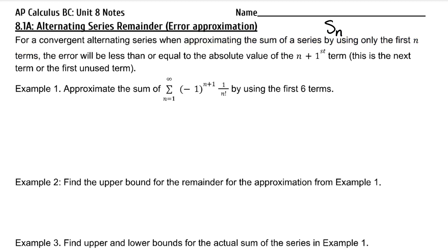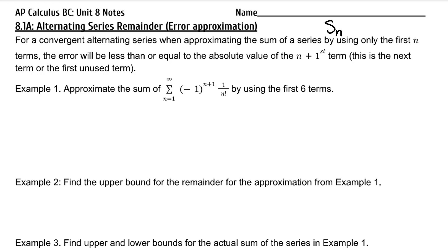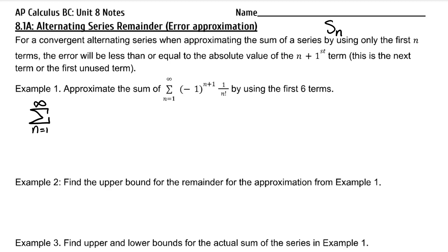For example 1, approximate the sum of the series by using the first six terms. We'll be using this alternating series and we will approximate the sum by adding the first six terms. So we will be evaluating S sub six, the sixth partial sum.